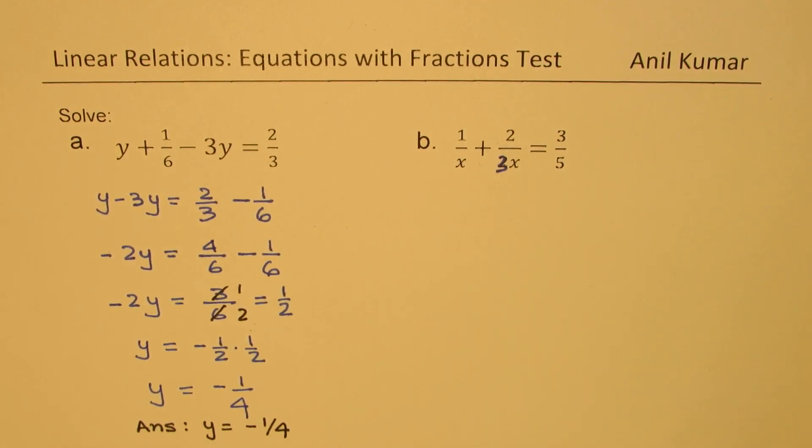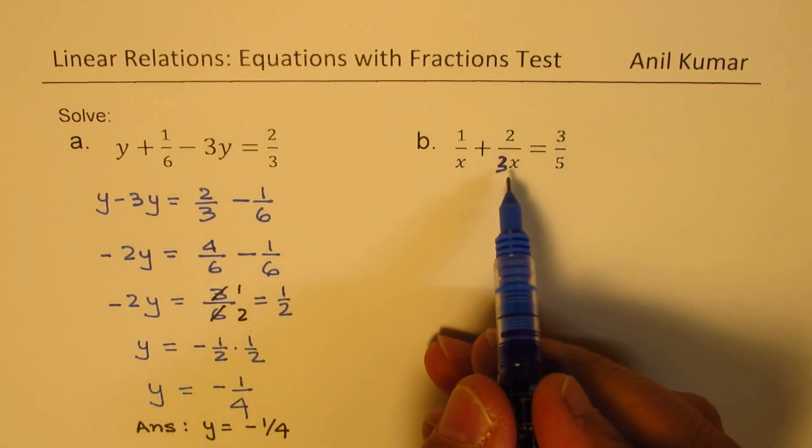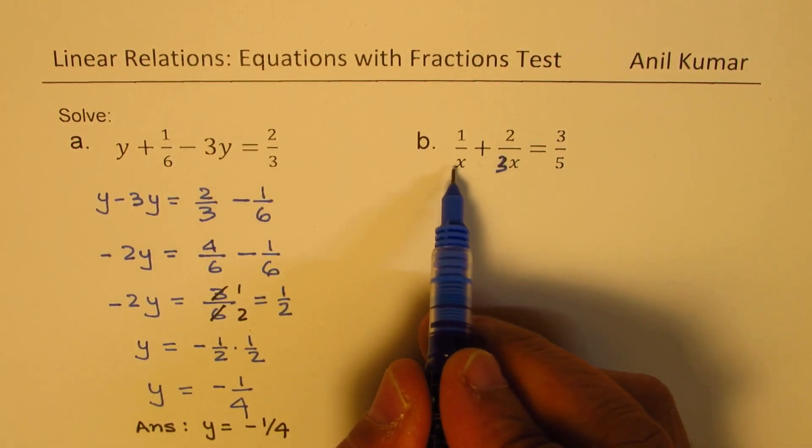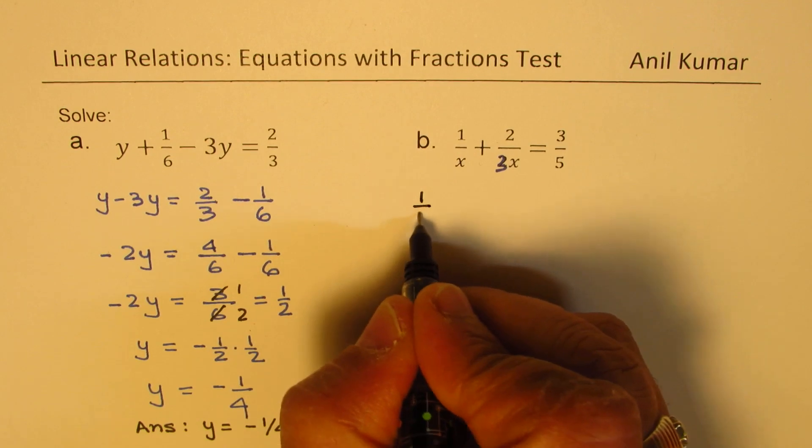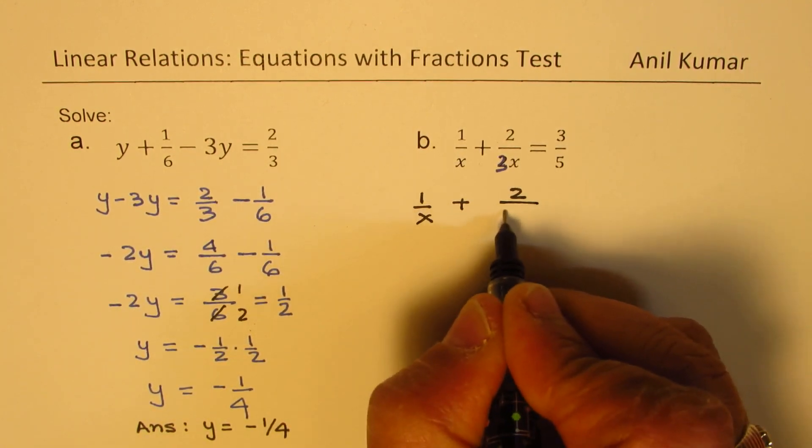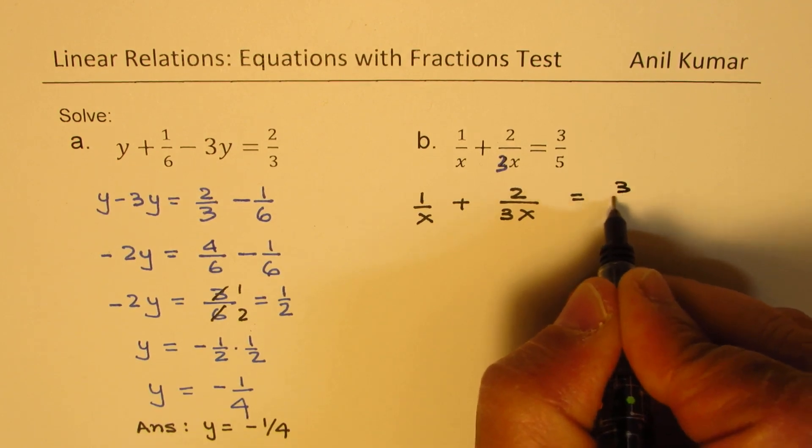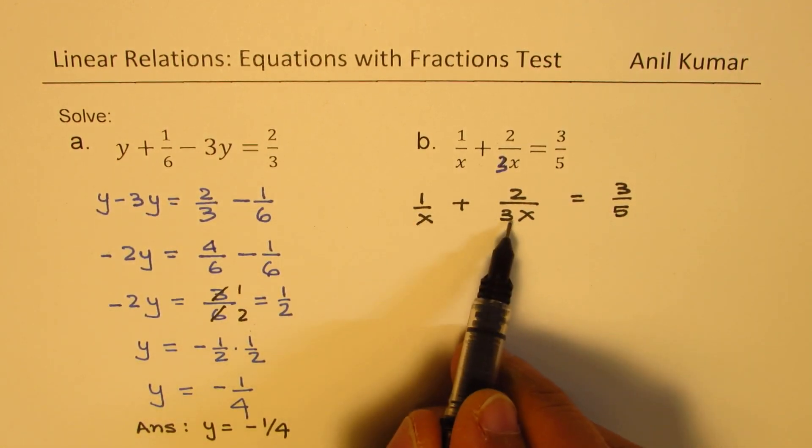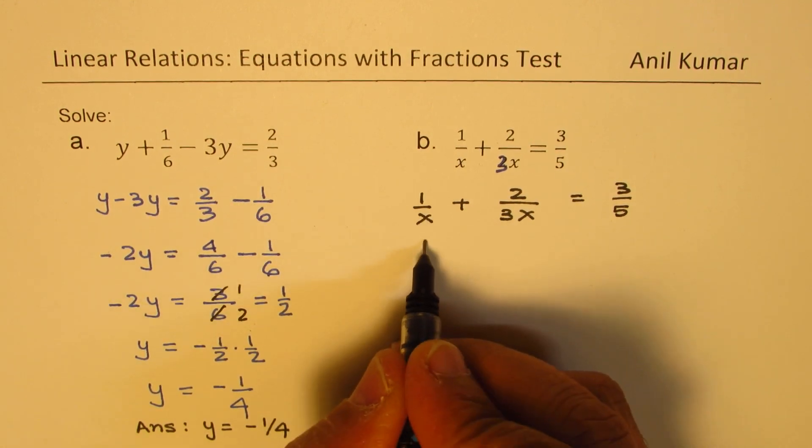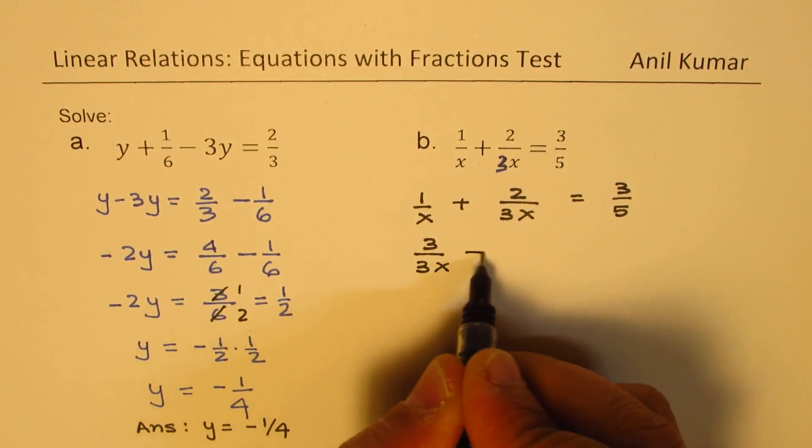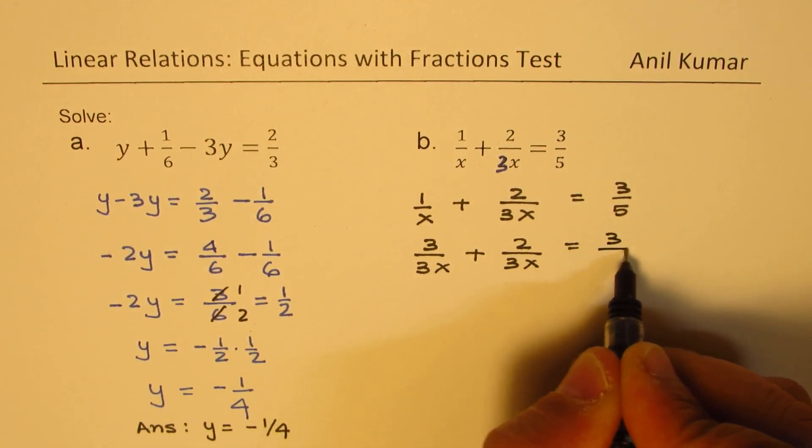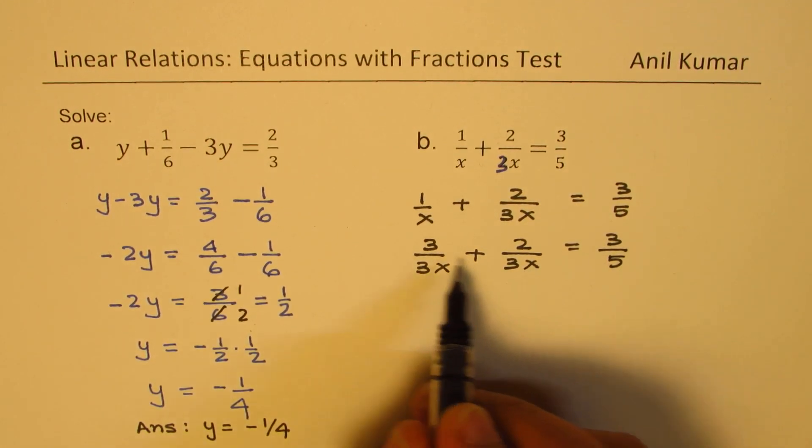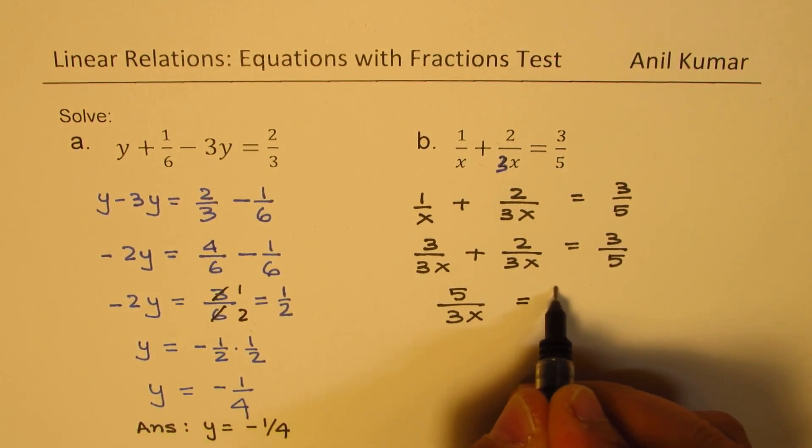Now let's see how to do the second equation, which I changed a bit. On the left side, we have x and 3x. Let me rewrite this: 1 over x plus 2 over 3x equals 3 over 5. We have to multiply by 3 to get 3 over 3x plus 2 over 3x, which equals 3 over 5. With common denominator 3x, we can add the numerators, so we get 5 over 3x equals 3 over 5.